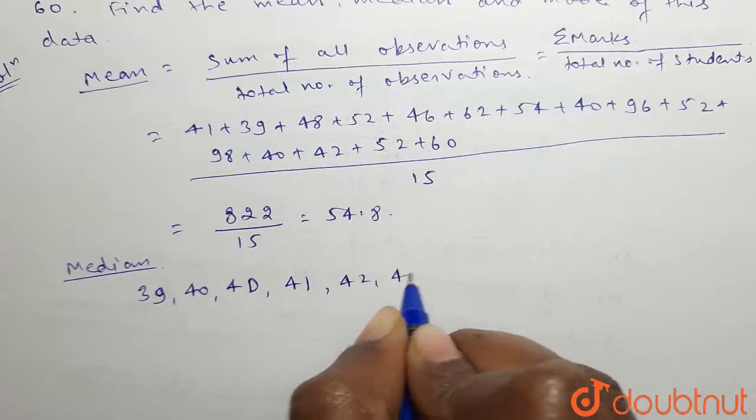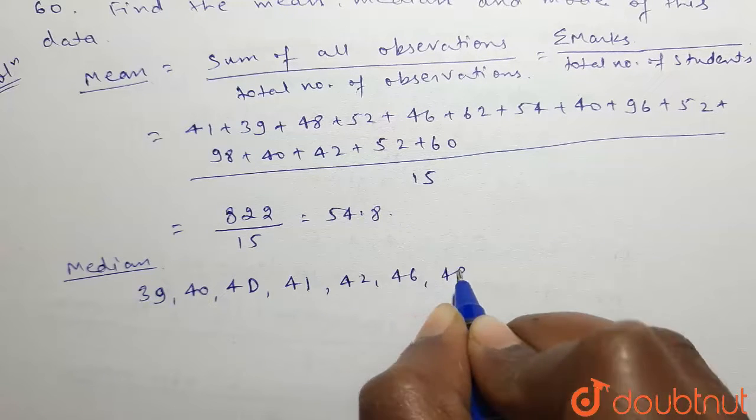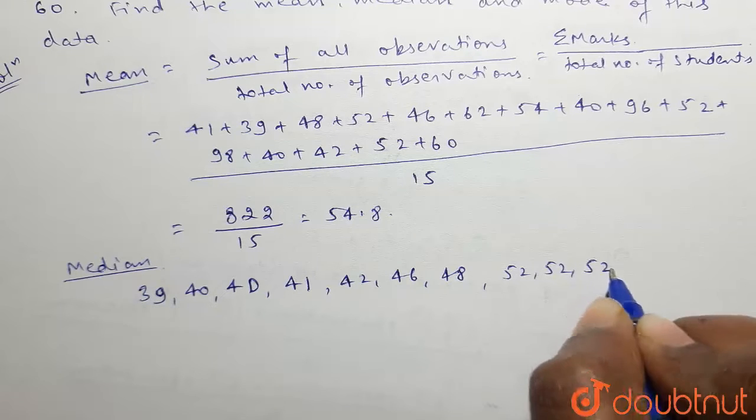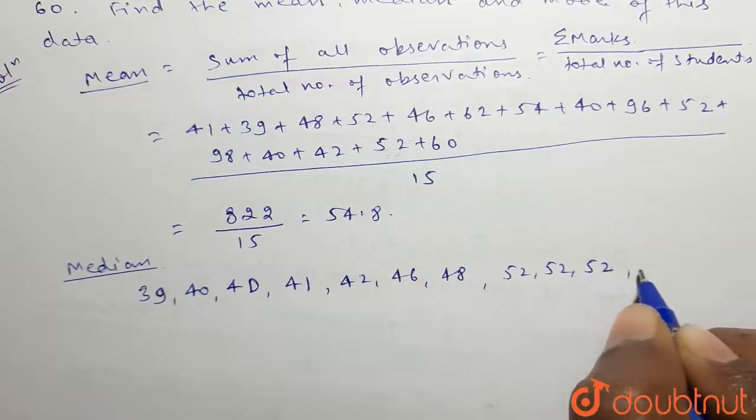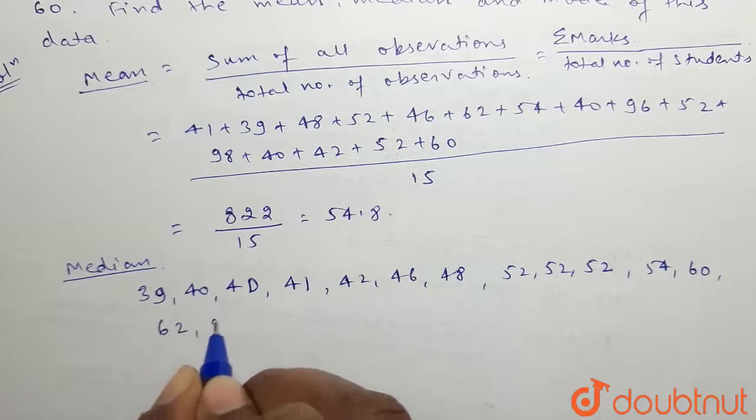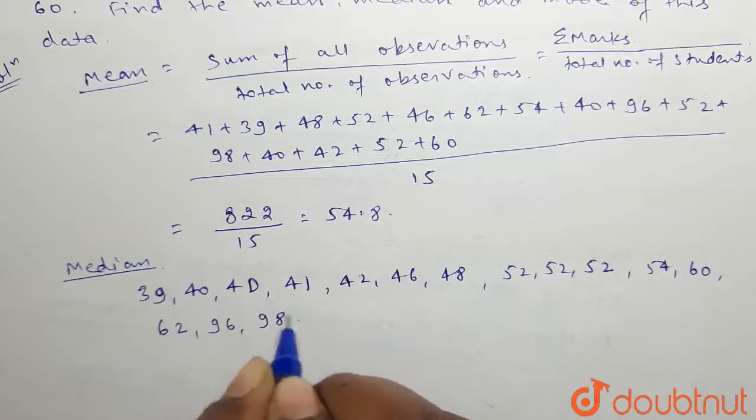42, 46, 48, 52, 52, 52, 54, 60, 62, 96, and 98. Now the data is arranged in ascending order.